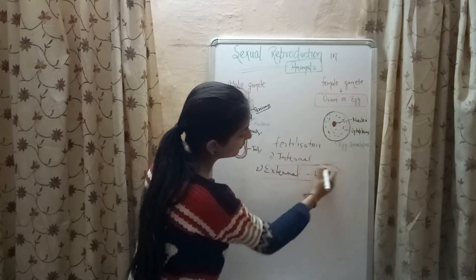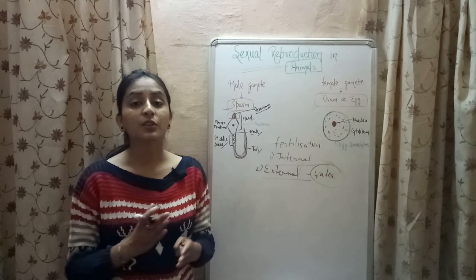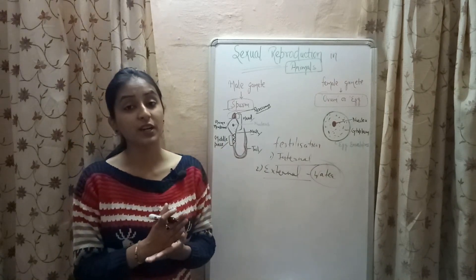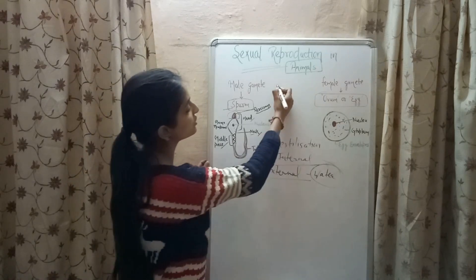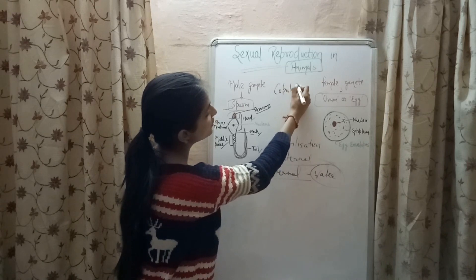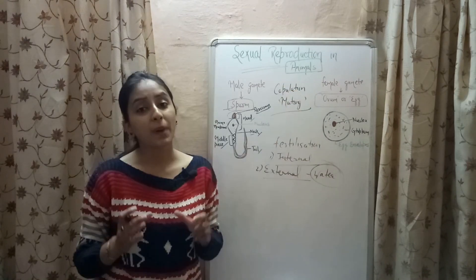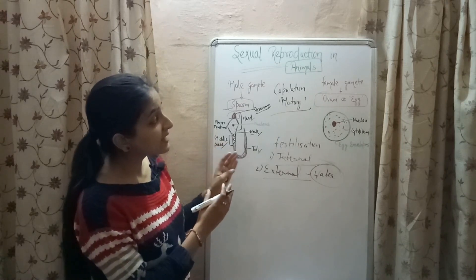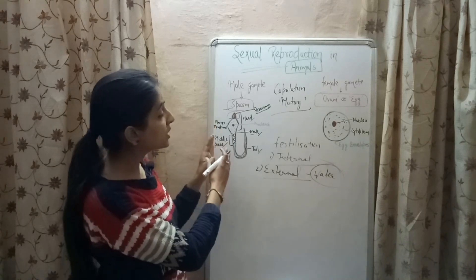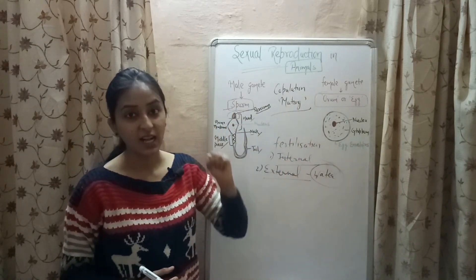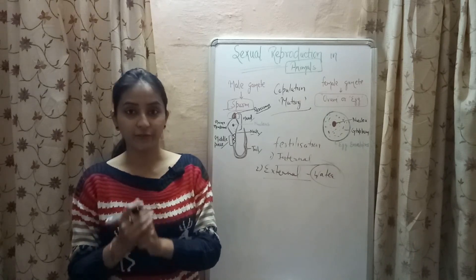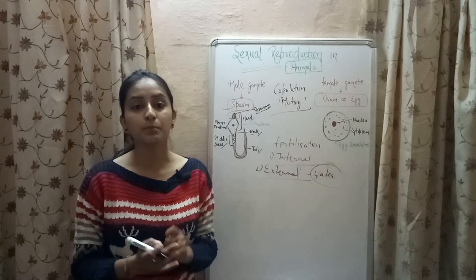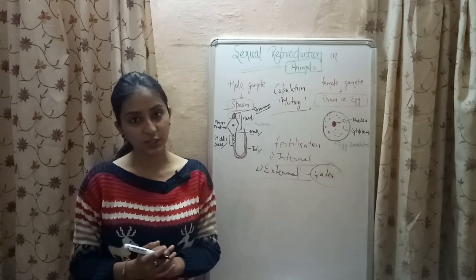In internal fertilization, the fusion of male and female gamete takes place inside the female body. For this fertilization to occur there is a process known as copulation, which in general is known as mating. By the process of mating, the male animal injects its sperm inside the body of the female so that the sperm can reach the genital tract of the female. Internal fertilization occurs in birds, reptiles and mammals, including human beings.